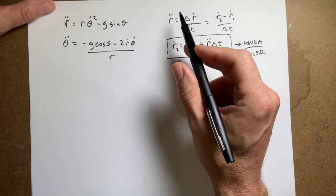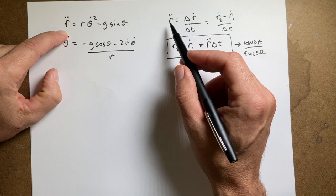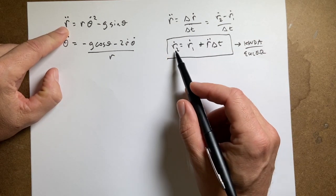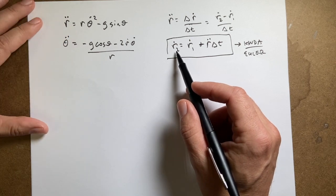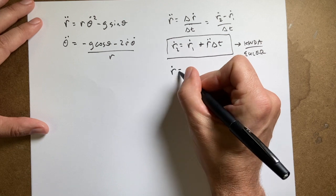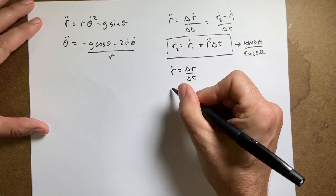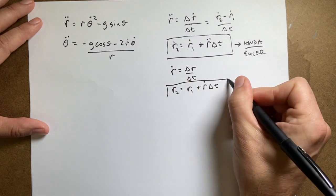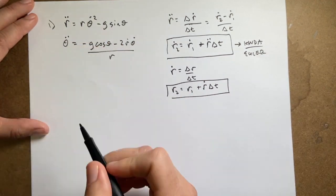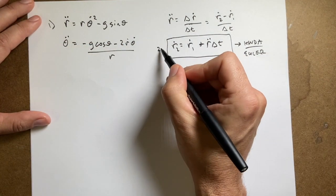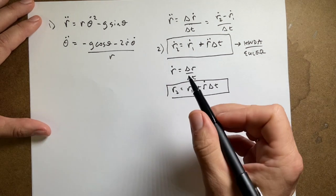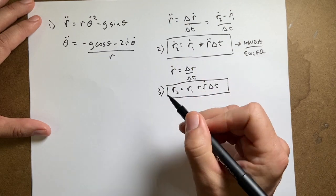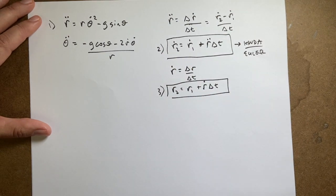Now once I find, if I start right here, I can calculate based on the initial conditions r double dot. From that, in the short time interval, I can update r dot. And then I can do the same thing. r dot is delta r over delta t, so r2 equals r1 plus r dot delta t. So here's my step. One, calculate r double dot. Two, calculate r2 dot, that's updating the velocity, the radial velocity. Three, update the radial position.